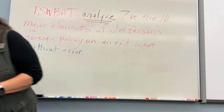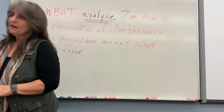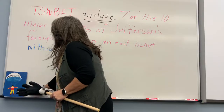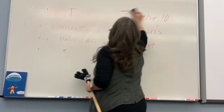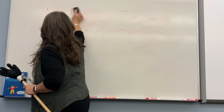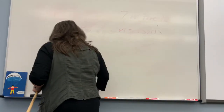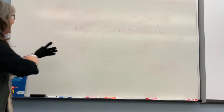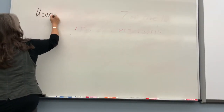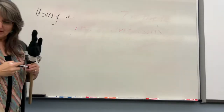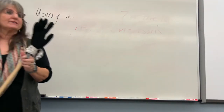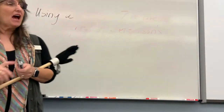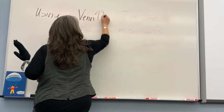Now we're going to write a learning objective that strays a little from the formula — starting with the word 'using' instead of 'the student.' So: 'Using a Venn diagram' — I like that, Jim Bob. Starting with a condition phrase first is another way to write a learning objective.